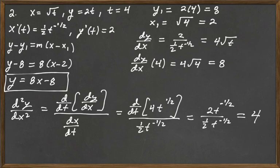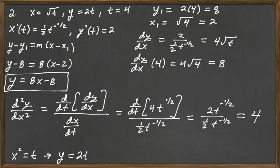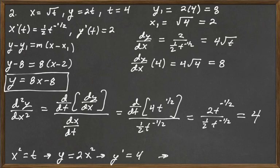So we're going to have a constant concavity of 4 — constant concave up. We can verify this by eliminating the parameter: since x = √t, then x² = t. Substituting into y = 2t gives y = 2x². Taking the derivative, y' = 4x, and the second derivative y'' = 4, which matches what we found for the second derivative parametrically.